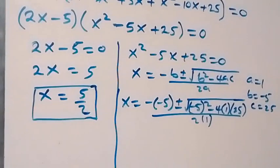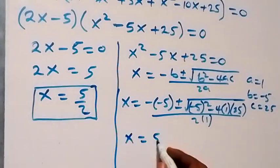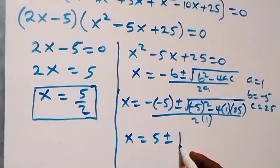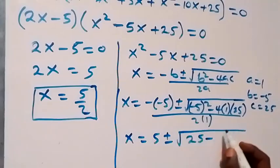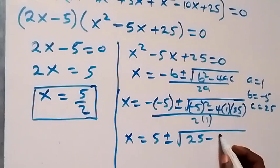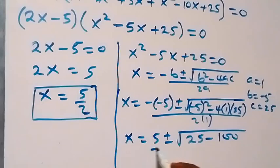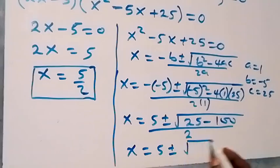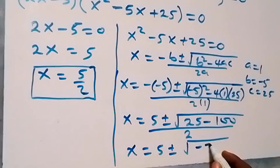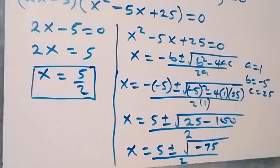This gives x equals 5, plus or minus square root of 25 minus 100, all over 2. Inside the square root we have 25 minus 100, which equals minus 75. So x equals 5, plus or minus square root of minus 75, over 2.